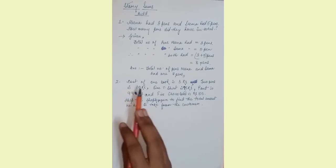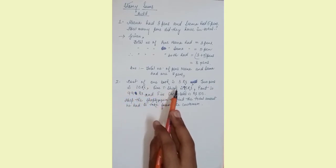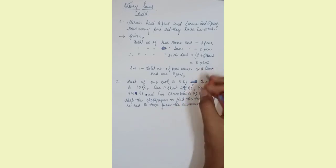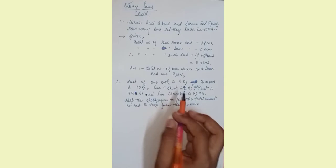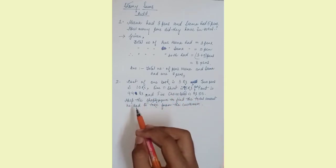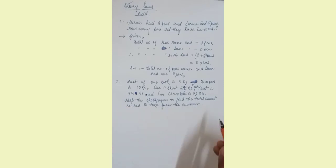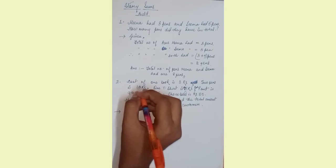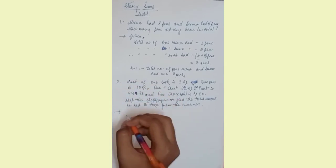Our next sum is: cost of one book is rupees three, two pens is ten rupees, one t-shirt is 95 rupees, one paint is 99 rupees, and five chocolates is 50 rupees. Help the shopkeeper to find the total amount he had to take from the customer.